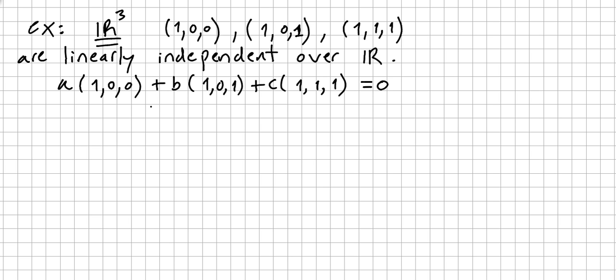So if they were dependent, there would be a, b, and c such that, if they were dependent, there would be a, b, and c such that a times the first vector, b times the second vector, and c times the third vector equals zero. If they were linearly dependent. This was my mobile phone.